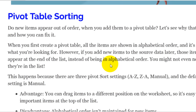Another topic I looked at this month was sorting items in a pivot table. Whenever you create a new pivot table and put a field in, everything is shown in alphabetical order, which makes it easy to find what you're looking for. But as you go along and add new items in the source data, when you refresh the pivot table, instead of staying in alphabetical order, the new items appear at the bottom of the list — sometimes you don't even notice them there.